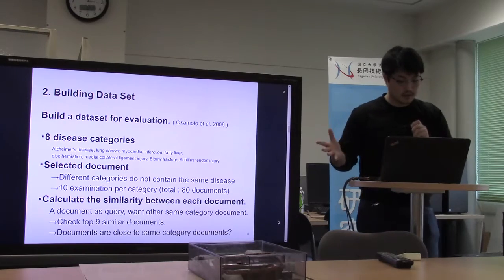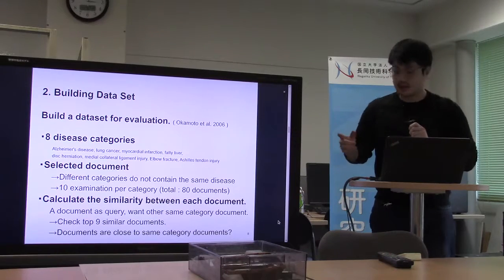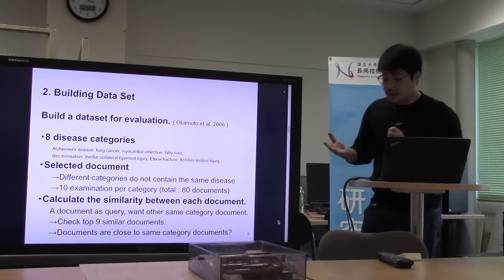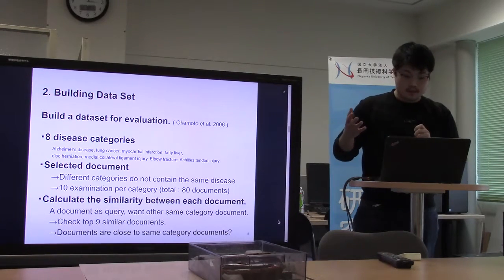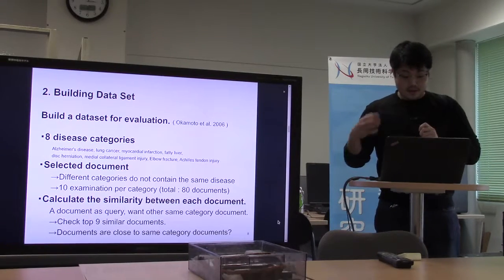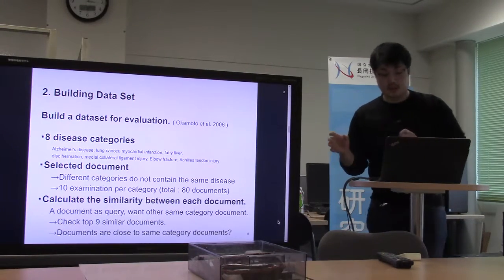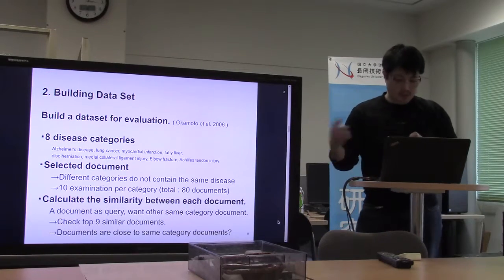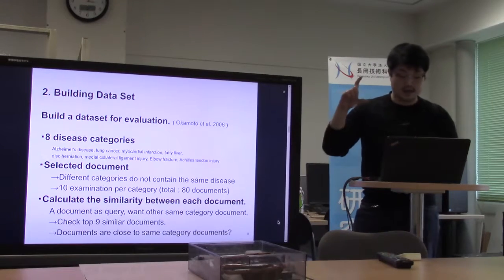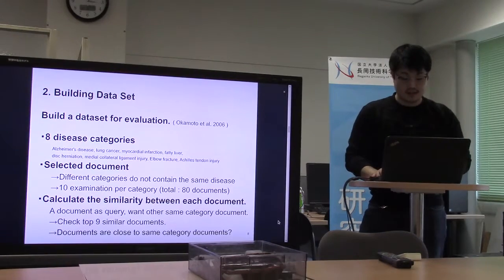This is the process of building the dataset. First, we selected eight disease categories. Next, we selected 10 documents per category. We used documents from all 80 documents and calculated the similarity between documents. We then checked whether the remaining nine documents from the same category could be retrieved or not.